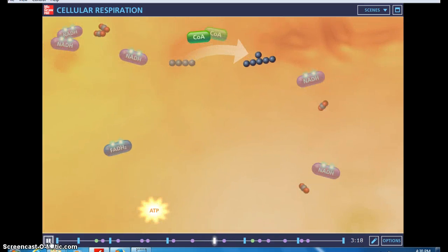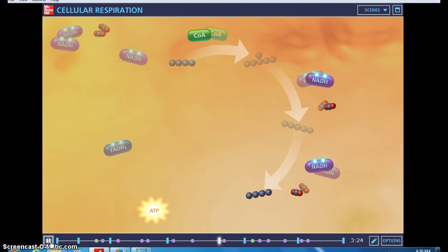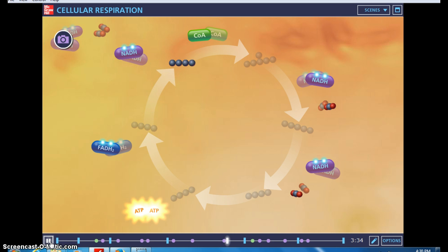For every glucose that enters glycolysis, the cycle completes twice, once for each molecule of pyruvate that entered the mitochondria. During pyruvate oxidation and the citric acid cycle, a net of 8 NADH, 2 FADH2, 2 ATP, and 6 CO2 are produced for each glucose molecule.